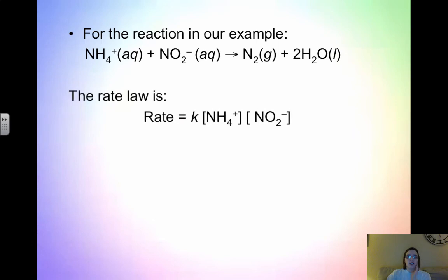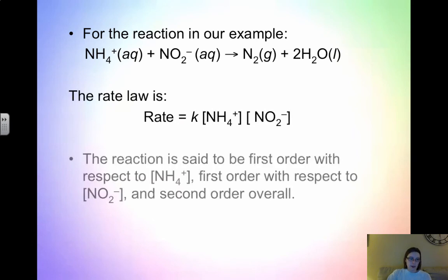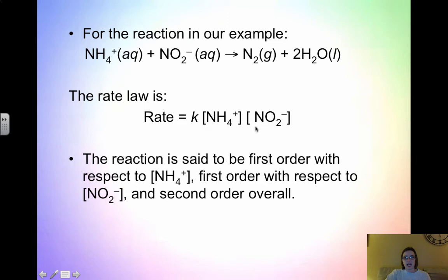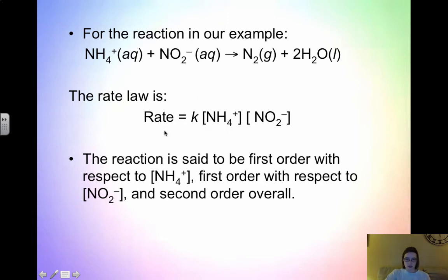In our example, the reaction is first order with respect to the ammonium ion, first order with respect to the nitrite ion, and second order overall (1 + 1). This means if the NH4+ concentration is doubled while NO2- is constant, the rate should double. If NH4+ is held constant and NO2- is tripled, the rate should triple — directly proportional.